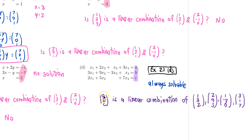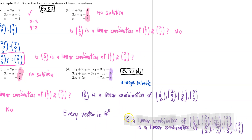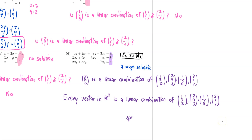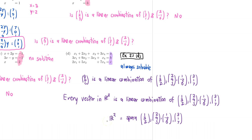Because A, B, C can be anything, what that means is every vector in R³ is a linear combination of these four vectors. So I can conclude from the fact that this system is always solvable that every vector in R³ is a linear combination of these four vectors. In other words, the span of the four vectors is R³ — spanning them gives all possible vectors in R³. We're going to explore this situation further in the next example.